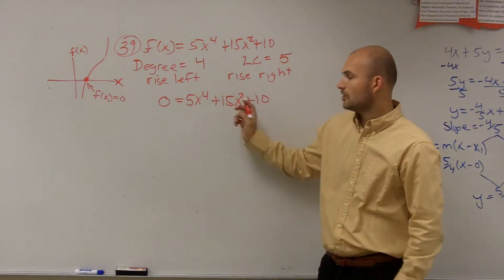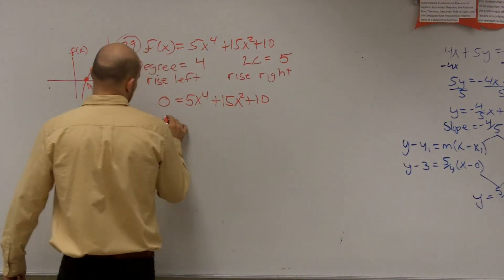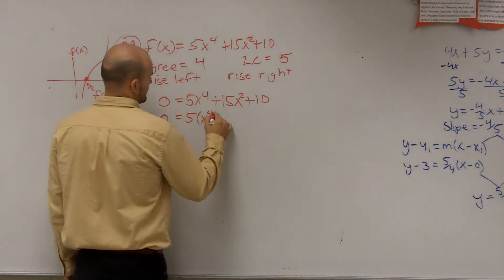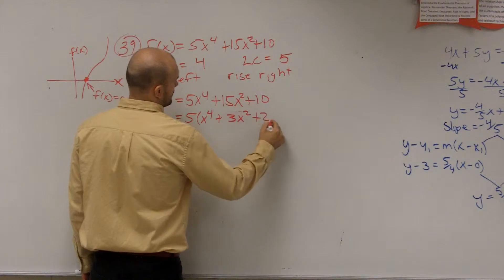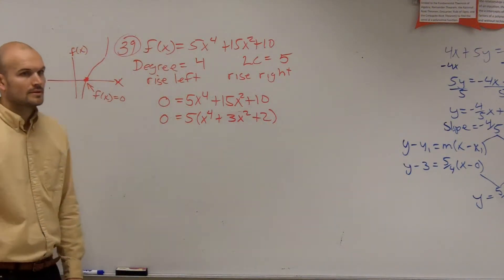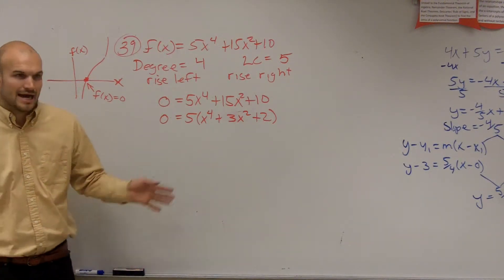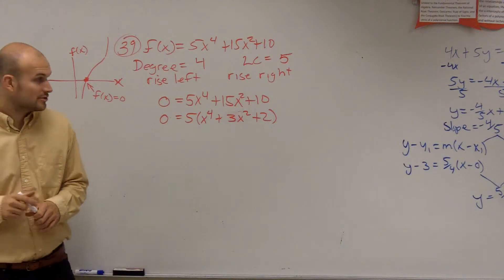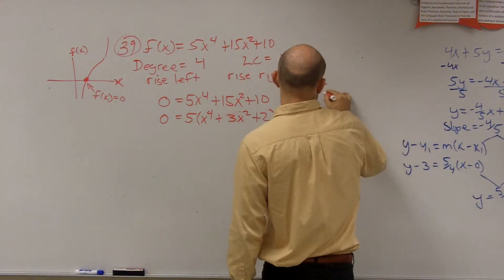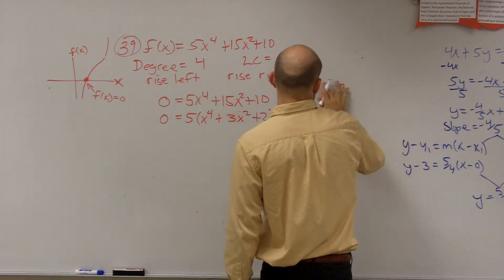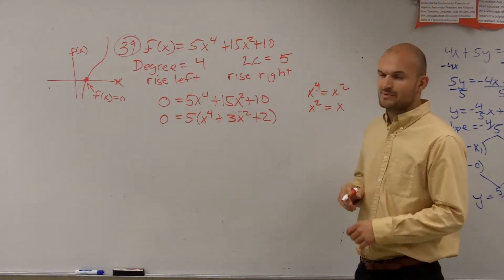So when you first learn factoring, the first thing you learned to do was make it as simple as possible. Factor out what they all have in common. Correct? OK. So let's look at all three of these terms. What do all three of the terms have in common? Five. So let's factor out the five. Now, here's where I'm going to kind of confuse you and give you a little tip. I can factor it like this, but some of you might not. So what I'm going to do is I'm going to write a little key. I'm going to say x to the fourth equals x squared, x squared equals x. OK? I'm going to write myself a little key.